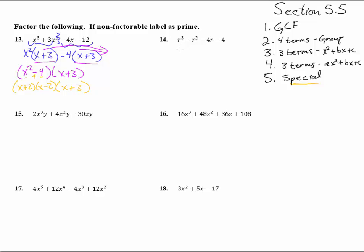Number 14. Again, let's check number 1. Let's put a star by that to remind us, always check the greatest common factor first, and there's nothing there. So we have 1, 2, 3, 4 terms, so we're here in method 2.